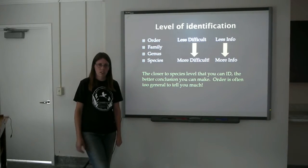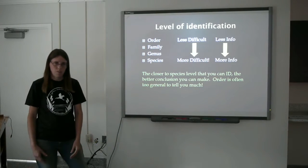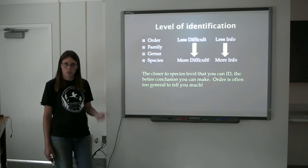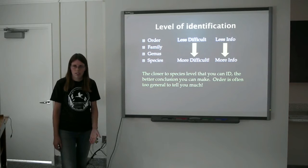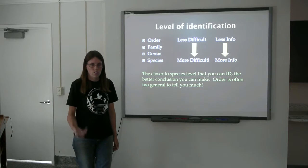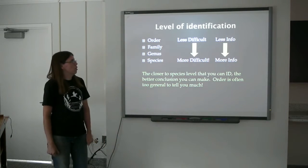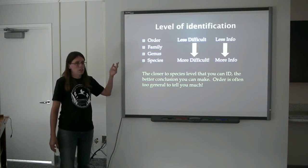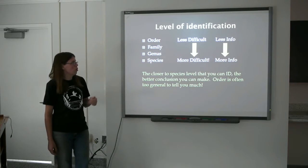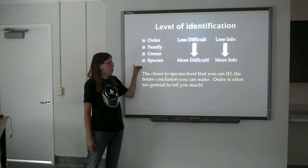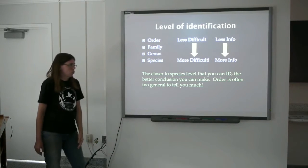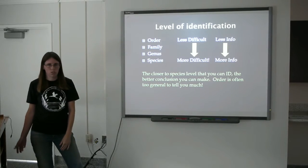The level of identification that you need is an important thing to know. Obviously, the higher level of identification — the more specific level of identification towards a species level — is going to be more difficult. That takes a lot more skill. A lot of times, this is not something that volunteers or early students would be able to do. A more general level of identification to order or family is a lot easier for people with limited experience with bugs. However, the more specific identification you can get to, the more information you will have about your site. The closer to the species level that you can ID, the better conclusions you can make about that site.